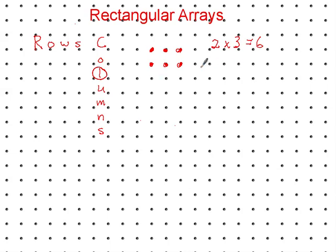Keeping with a product of six, now we're going to have three rows times two columns. So three rows, one, two, three, times two columns, one, two. Three times two equals six.